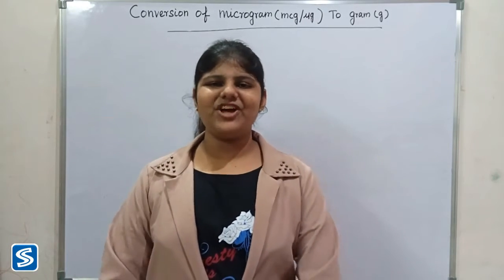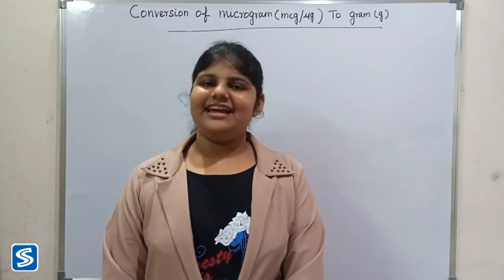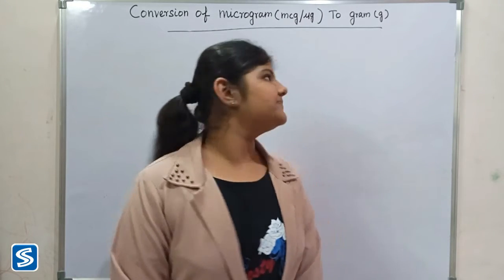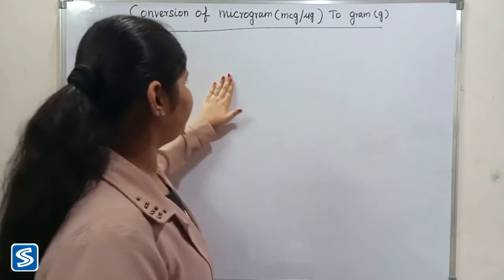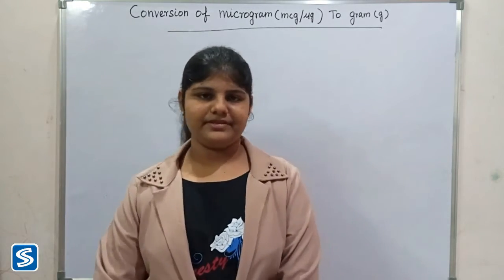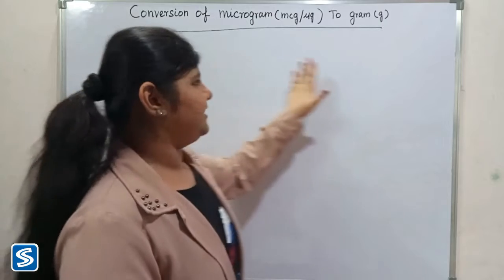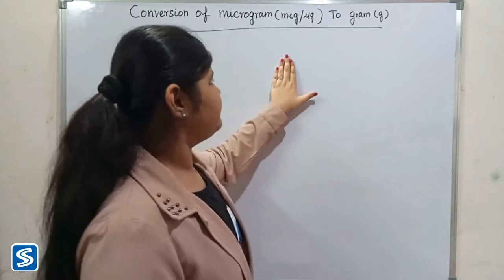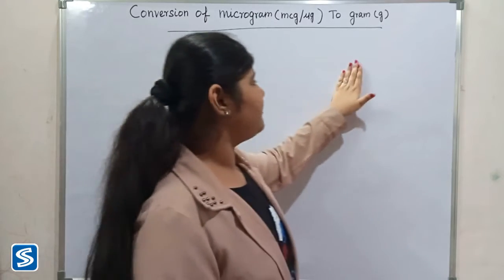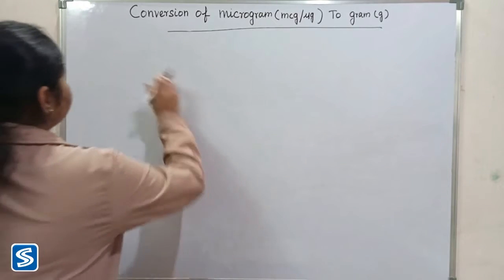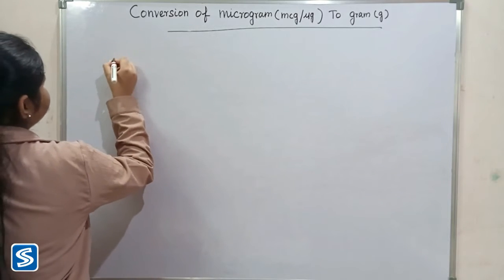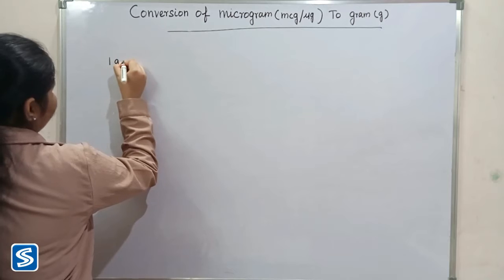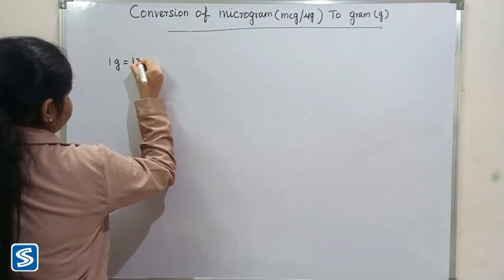Hi friends, welcome to Saumush channel. In this video I am going to teach how to convert microgram into gram. Microgram and gram are the units of mass in the metric system. The short form of microgram is mcg and the short form of gram is g. We already know that one gram is equal to one million micrograms.